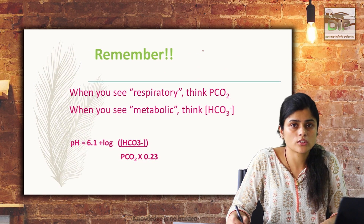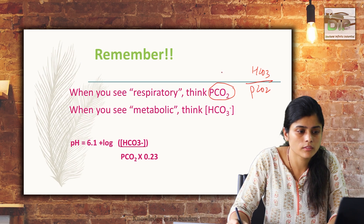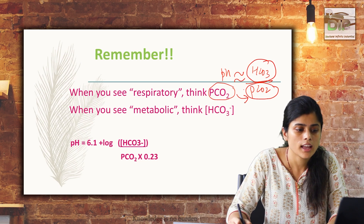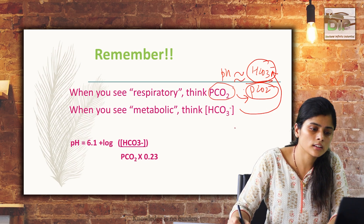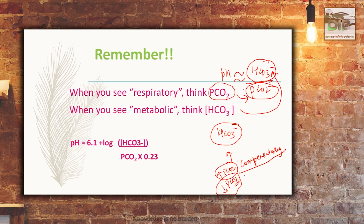To summarize: respiratory acidosis and alkalosis are linked to pCO2 — pH is regulated by HCO3 in the numerator and pCO2 in the denominator. Metabolic disorders are linked to bicarbonate and compensated by the respiratory mechanism in the opposite direction — if bicarbonate changes, pCO2 compensates. Increase in pCO2 relates to hypoventilation and decrease in pCO2 to hyperventilation. Using the solubility constant for CO2 and the bicarbonate level, pH can be calculated from the Henderson-Hasselbalch formula.